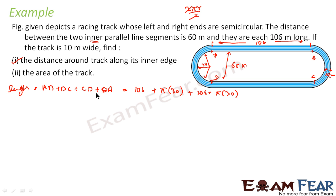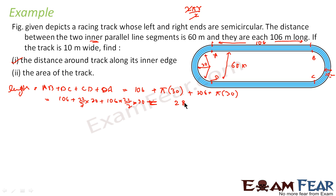Solving this: 106 + (22/7) × 30 + 106 + (22/7) × 30. This comes out to be 2 × 106 plus 2 × (22/7) × 30, which equals approximately 204 and 4/7 meters. The distance around the inner track is 204 and 4/7 meters.